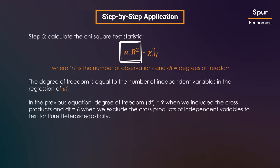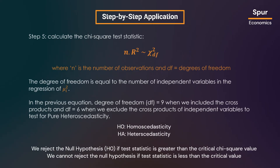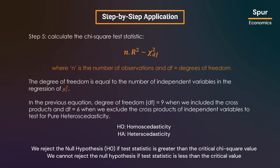This statistic follows a chi-square distribution with degrees of freedom equal to the number of independent variables in the auxiliary regression. In our example with cross products, the degrees of freedom will be nine; for pure heteroscedasticity without cross products, it will be six. We reject the null hypothesis of homoscedasticity if the test statistic is greater than the critical value of chi-square.